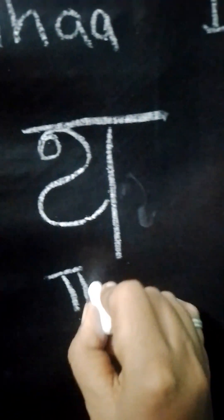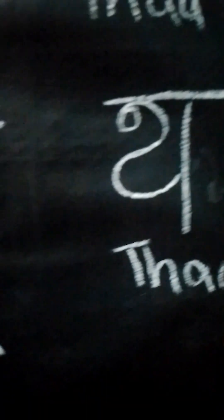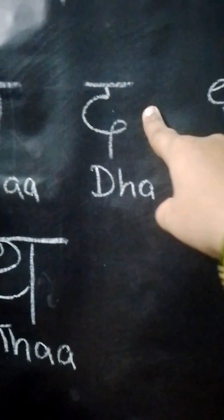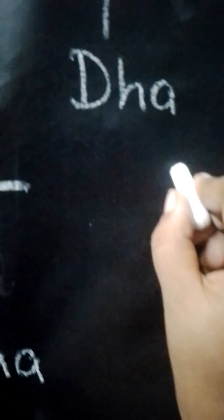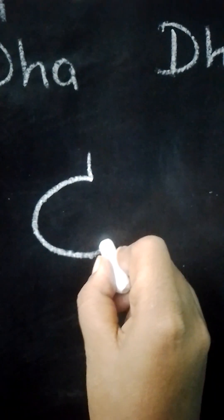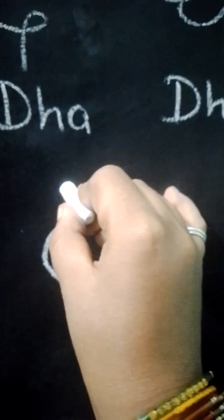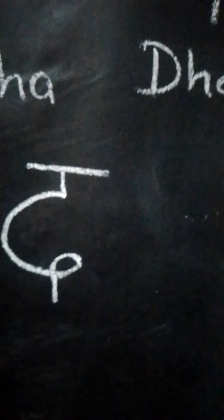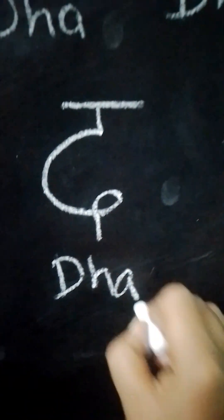This alphabet is known as Tha in Hindi. Now the third alphabet, Da. Let's see how we can write Da. First draw a standing line, then a semi-circle. Inside the semi-circle, draw a circle with a tail. At the top, draw a sleeping line. This alphabet is known as Da in Hindi.